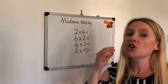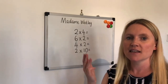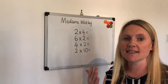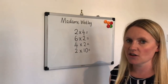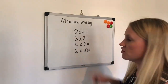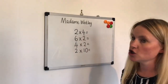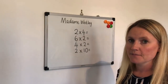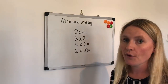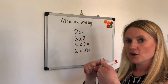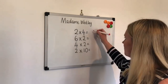Write the question down and then answer it. Our first one is 2 multiplied by 4. You're going to have to count in your twos four times: 2, 4, 6, 8. Well done.